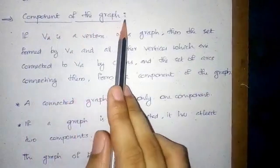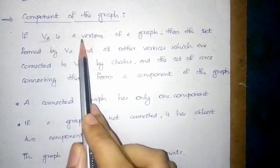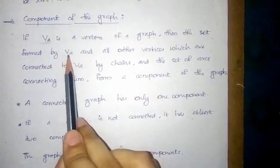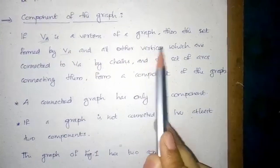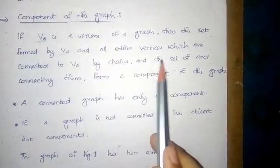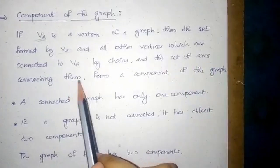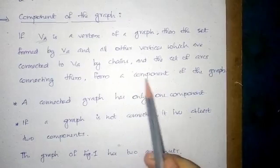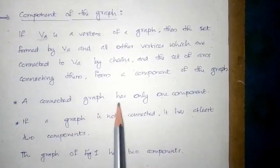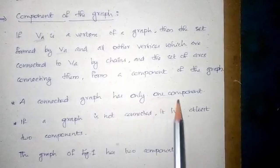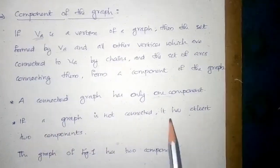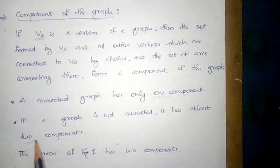Component of the graph. If V8 is a vertex of a graph, then the set formed by V8 and all other vertices connected to V8 by chains, along with the set of arcs connecting them, form a component of the graph. A connected graph has only one component. If a graph is not connected, it has at least two components.